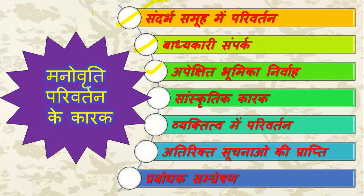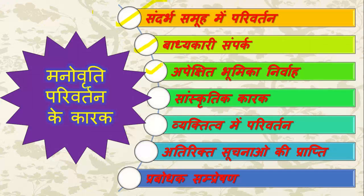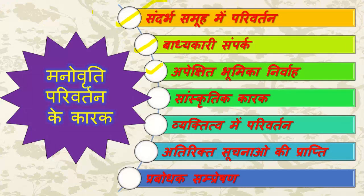Next is Apekshit Bhumika Nirvakh — the third point. If there is a person with an ideal and special value who has to do the same work, they can become balanced. If they think that the other person does not do the same work but works to do it, then they can change the same value. For example, there is a problem in our society, especially in the state of society, where people do not work at home. If people are told that you live at home and work on these things, you can take a lot of time to change. You can give these examples in Apekshit Bhumika.